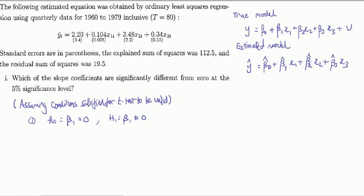Hi everyone, here's a bog-standard question on regression, whether you're studying regression in statistics or econometrics. We're given an estimated model. You recognize a multiple linear regression model because it's got more than one explanatory variable. It's got three.